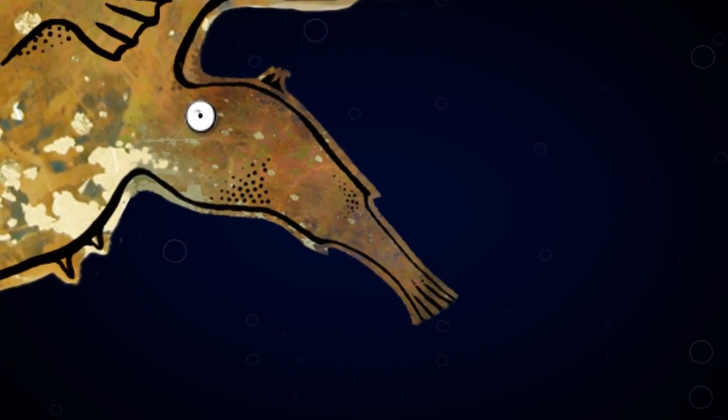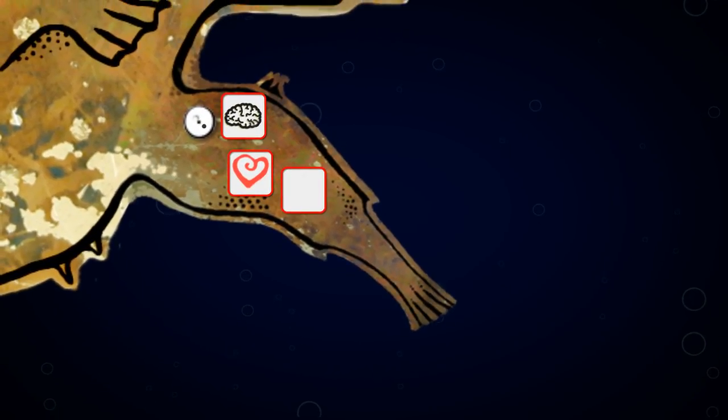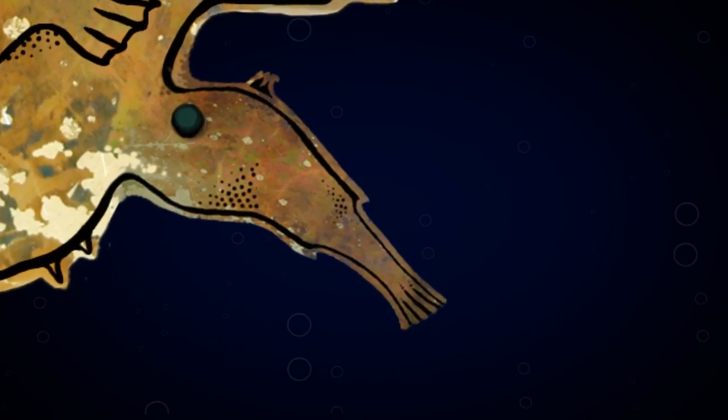The male then slowly atrophies, first losing his digestive organs, then his brain, heart, and eyes, and ends as nothing more than a pair of gonads.